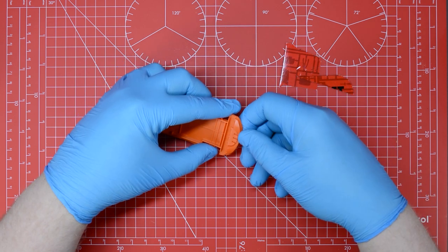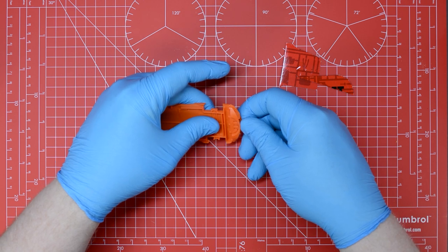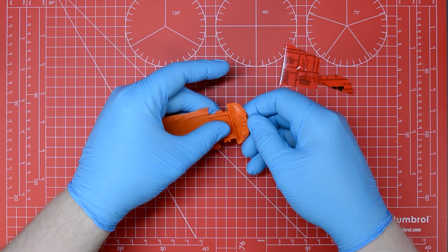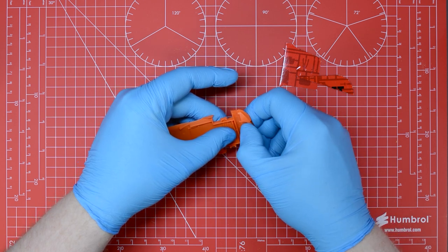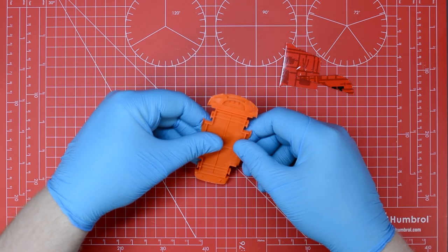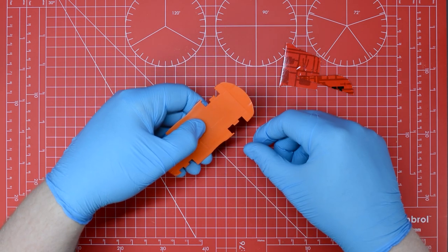With the polycement applied as per the yellow areas on the instruction manual, we simply press the two components together and hold them firmly while the polycement melts the plastic forming a permanent bond. After a few seconds this will hold under its own weight and then after a couple of minutes it will be set completely.